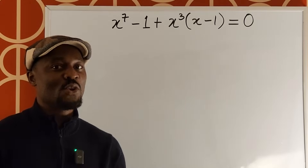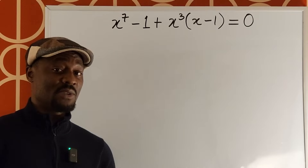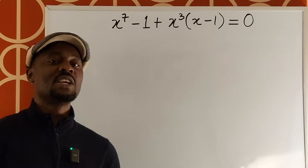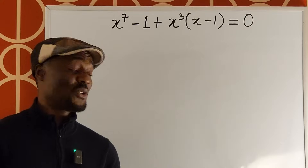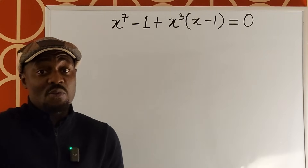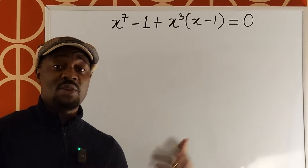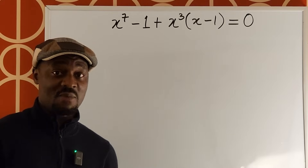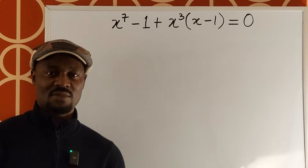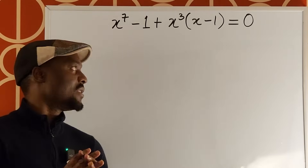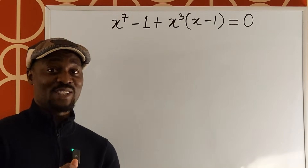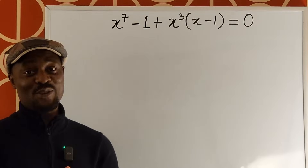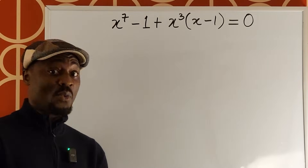If we use the Fundamental Theorem of Algebra, the Rational Root Theorem, or Descartes' Rule of Signs, we'll get to our answers quickly. Or if we don't use Descartes' Rule of Signs, we might just try synthetic division a number of times and still get the same answer. It just depends on the path you want to follow. Note that I'm using a different setting because I don't have access to my blackboard at this time.